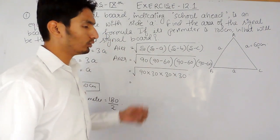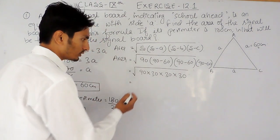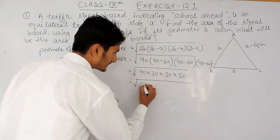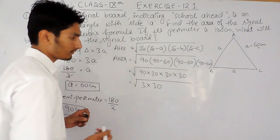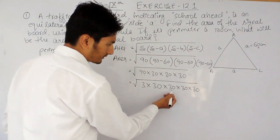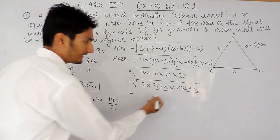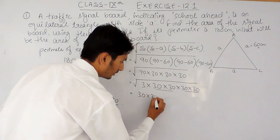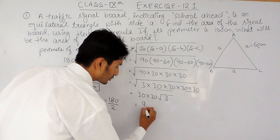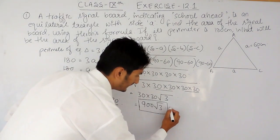Now we have to find the square root of this value. To do that, we factorize it, make pairs of two numbers, and take one number as common from each pair. I write 90 as 3 × 30, keeping the remaining 30s as they are. This lets us directly form pairs of 30. Taking 30 as common twice, only 3 remains inside the root. So the area equals 900√3 cm².